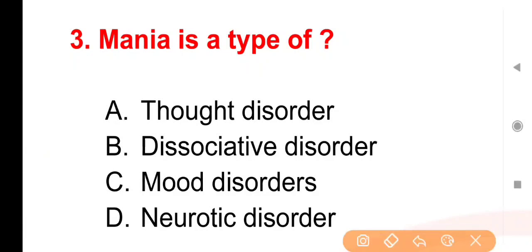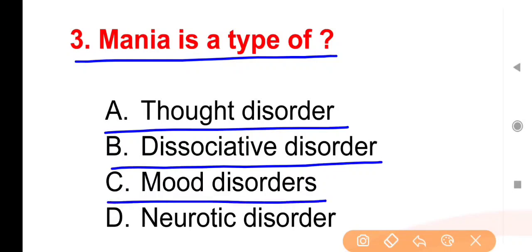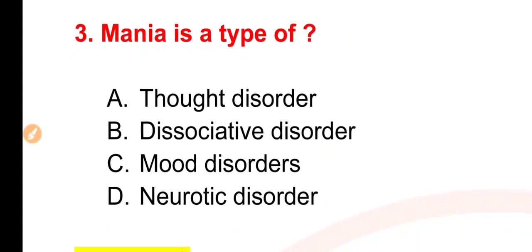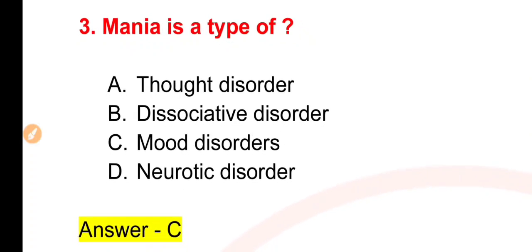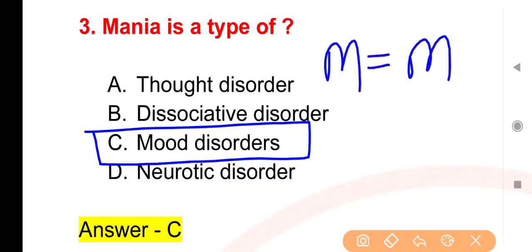Next question: Mania is a type of — mania kis prakar ka disorder hai? Options: Thought disorder, Dissociative disorder, Mood disorder, ya Neurotic disorder. The right answer is option C. Yaad rakhiyega — Mania mood disorder hai. M for Mania, M for Mood.